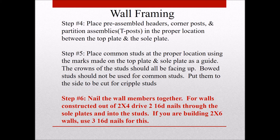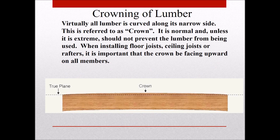The next step is to nail everything together. If you're building a 2x4 wall, drive two 16d nails through the sole plates into the studs. If you're building a 2x6 wall, use three 16d nails. It's important that crowns always face upward — if we're talking about rafters and ceiling joists, crown faces up; for walls, just have them all facing the same direction.